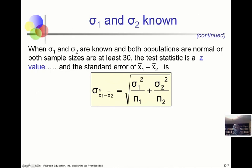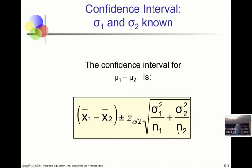Putting it all together, the confidence interval for μ₁ minus μ₂ is: x̄₁ minus x̄₂, plus or minus z subscript α/2 times the standard error. The subscript α/2 reflects that in a confidence interval, we split alpha and place half in each tail. This gives us our full confidence interval formula.